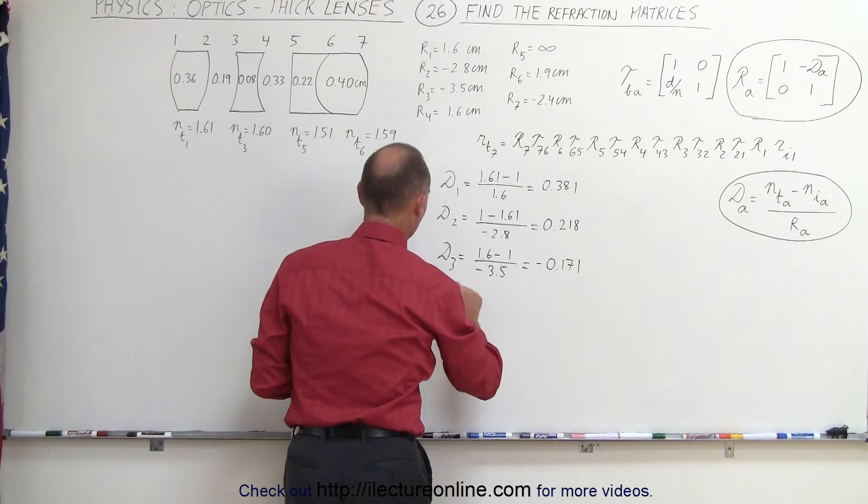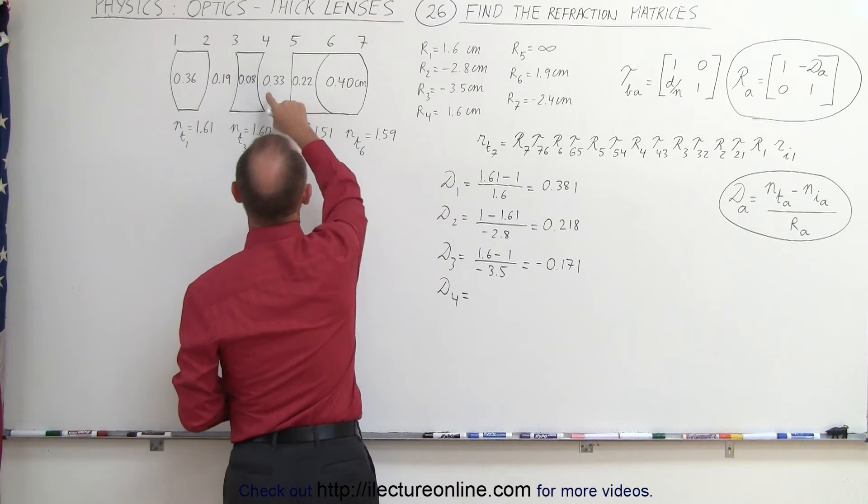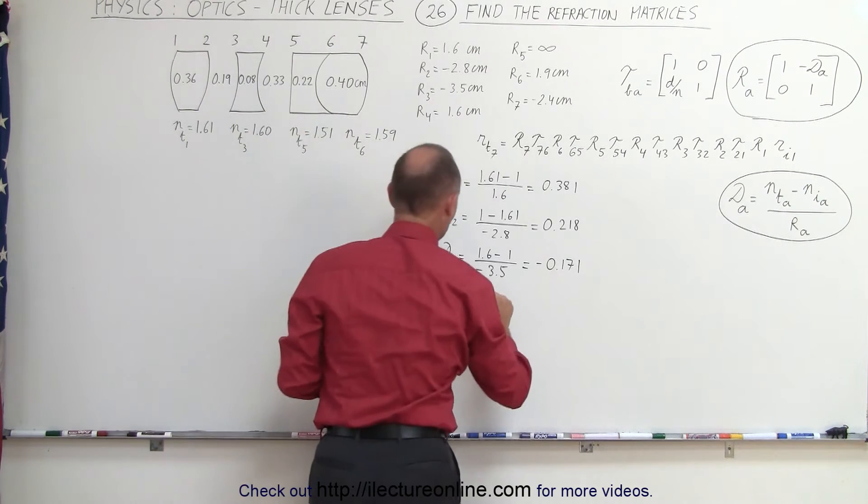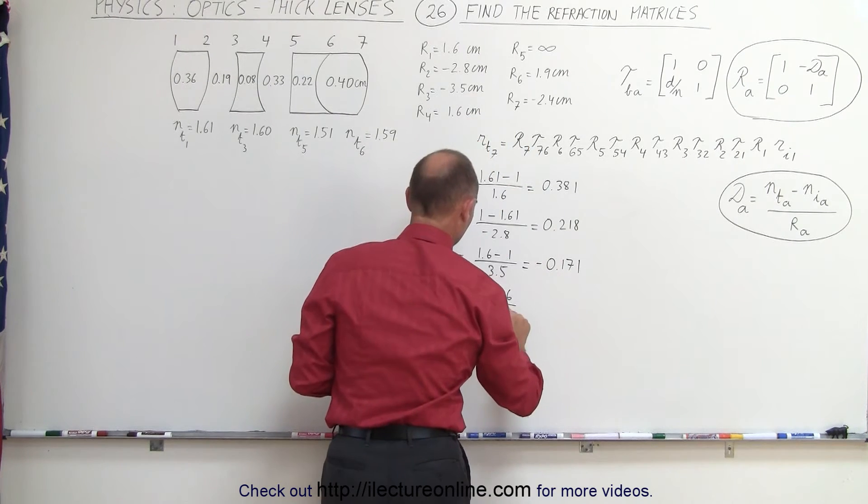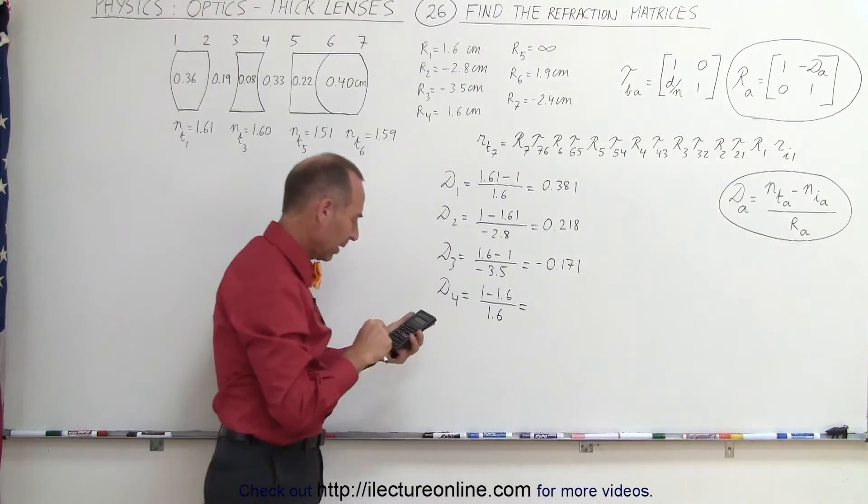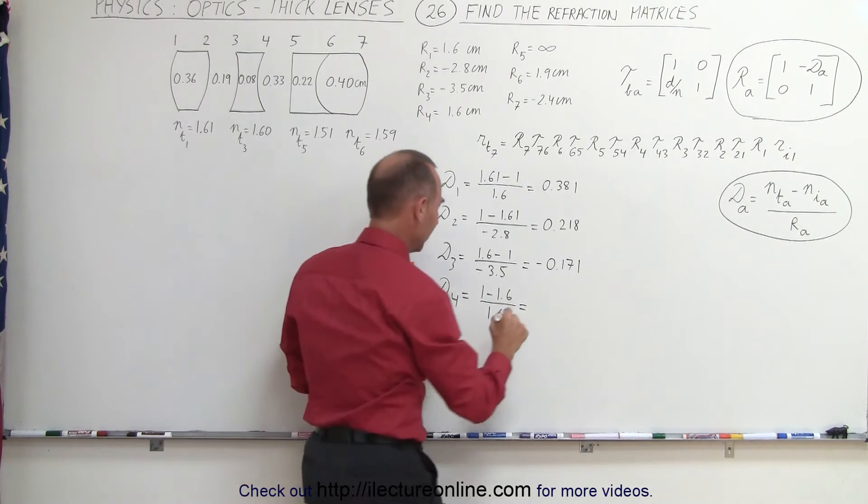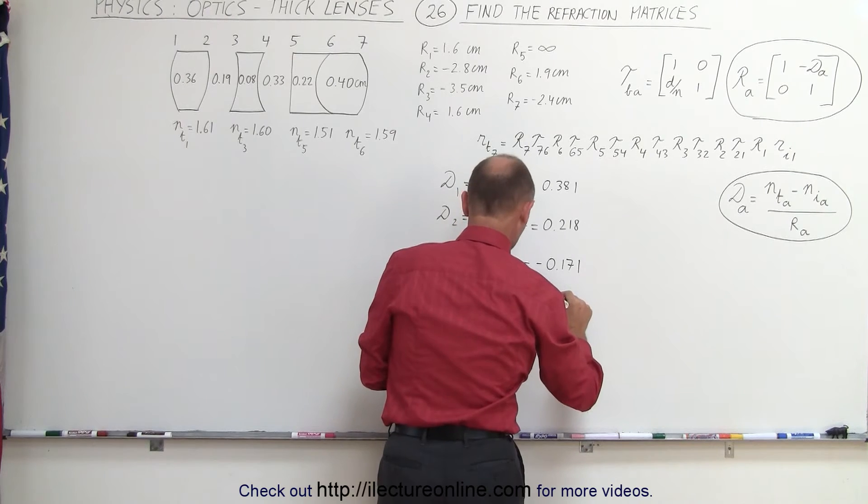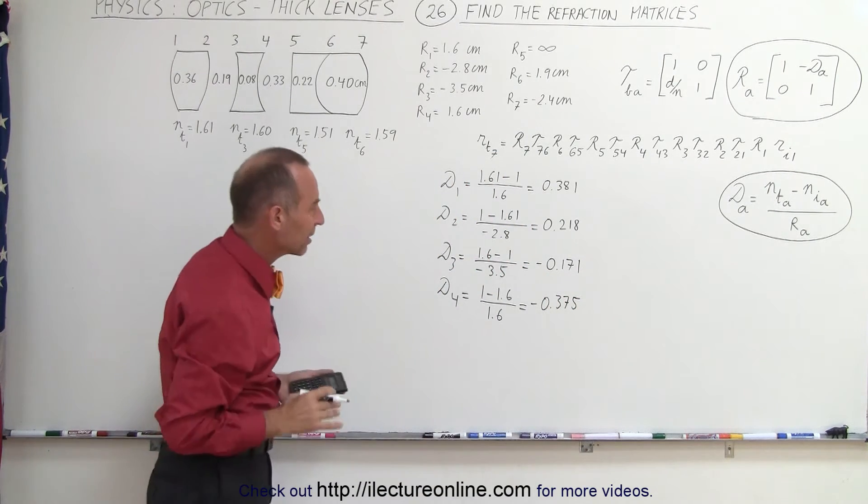Next, d4. So now we cross this boundary, it'll be air minus the index of refraction of that one, 1 minus 1.6 divided by 1.6. So we get 0.6 divided by 1.6, and that will be negative, negative 0.375. And I think you can see the pattern here of how that works.